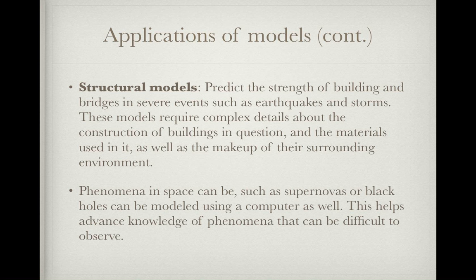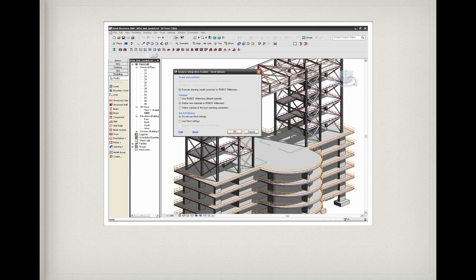Phenomena in space, such as supernovas or black holes, can also be modeled using a computer. This helps advance knowledge of phenomena that can be difficult to observe. In this picture, it is a structural model of a building, which may be used to test its strength or, in the event of an earthquake, how it may collapse and what kind of damage it will sustain.